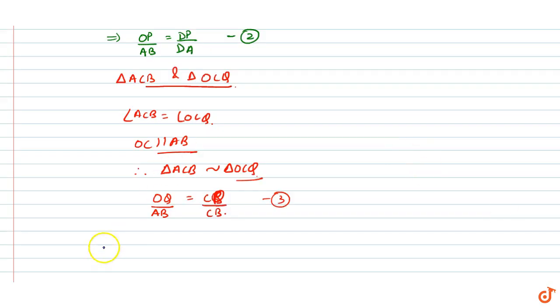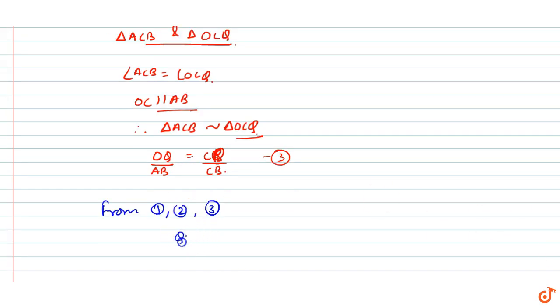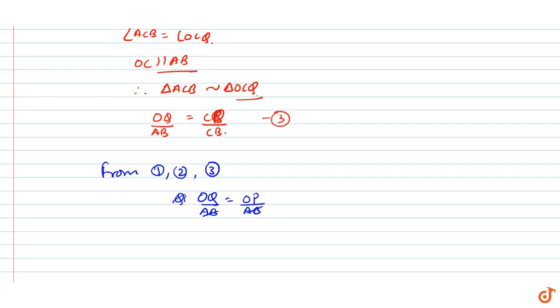From equations 1, 2, and 3, we can say that OQ upon AB equals OP upon AB. That means PO equals OQ.